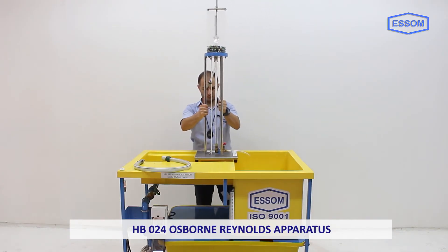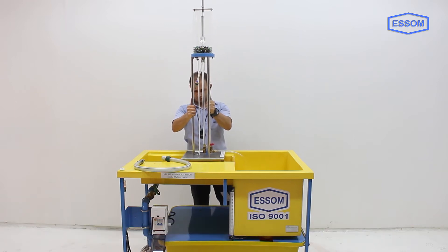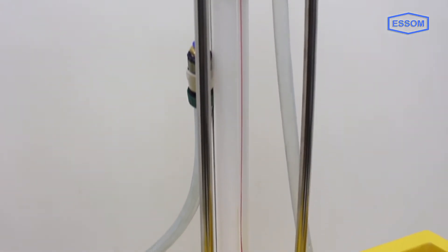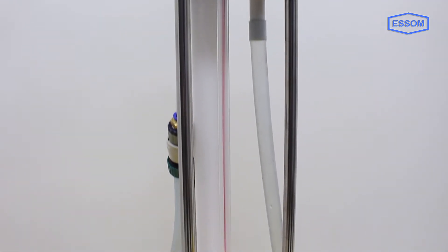SM HB024 Osborne Reynolds apparatus. This equipment provides laminar, transitional, and turbulent flow as predicted by Osborne Reynolds.